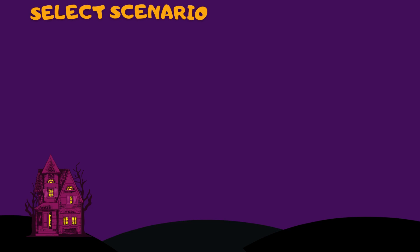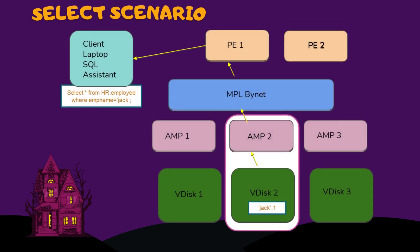In the previous slide we saw how the record was inserted and acknowledgement was received by the client. In this current one, we will validate if the inserted record Jack exists in the table. I will run a SELECT query on the HR.Employee table with a WHERE condition for the value Jack.